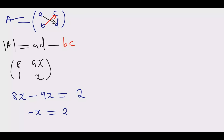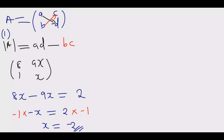We multiply both sides by negative 1, so X equals negative 2. This completes part A1.